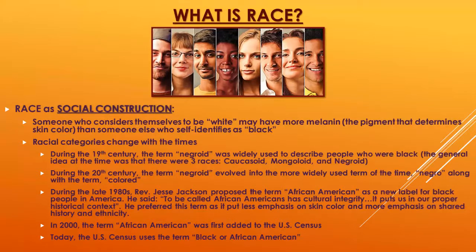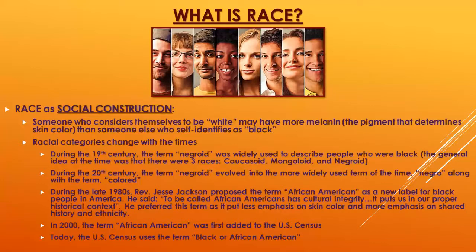Sometimes people define race by the amount of melanin in your skin, but how we define our racial category goes even further than that. Some people who call themselves 'white' might have more melanin in their skin than somebody who calls themselves 'black.' Racial categories change with the times — back in the 1800s there were three dominant racial categories: Caucasoid, Mongoloid, and Negroid.